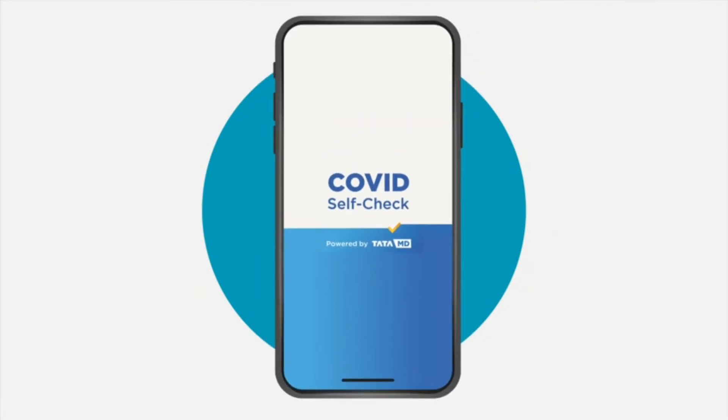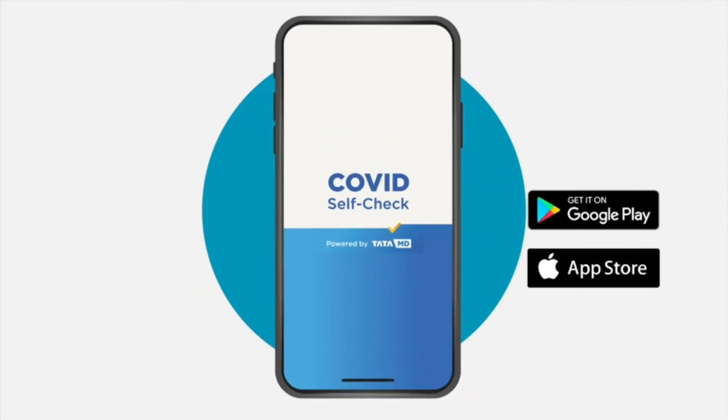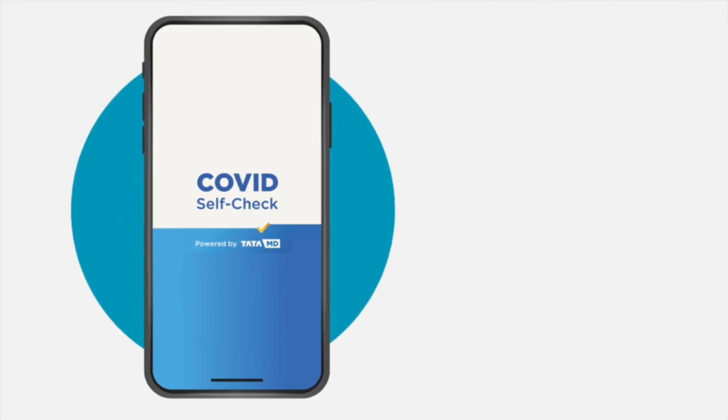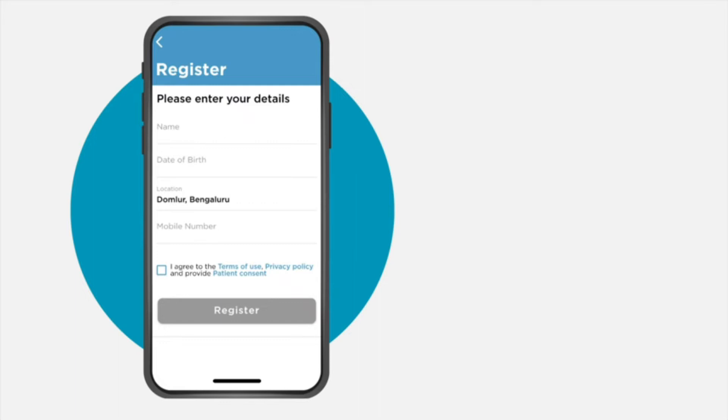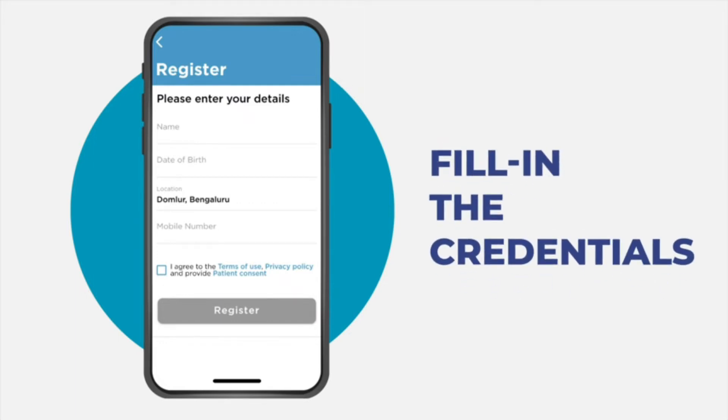First of all, download the COVID Self-Check powered by TataMD from Play Store or App Store on your smartphone. Open the COVID Self-Check powered by TataMD app and fill in the credentials.